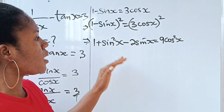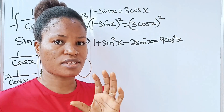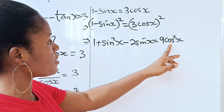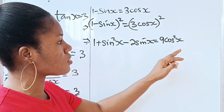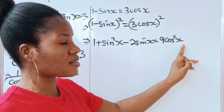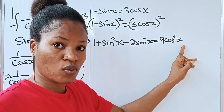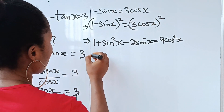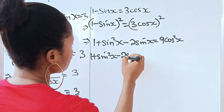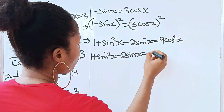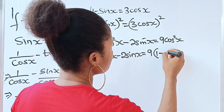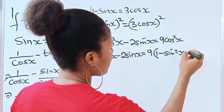I'm trying to form a quadratic equation, and cos squared x is going to disturb us, so let's change it to sine x. Because cos squared x equals 1 minus sine squared x. So we have 1 plus sine squared x minus 2 sine x is equal to 9 multiplied by 1 minus sine squared x.